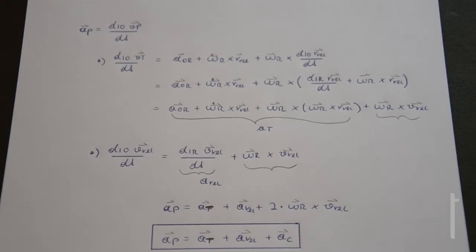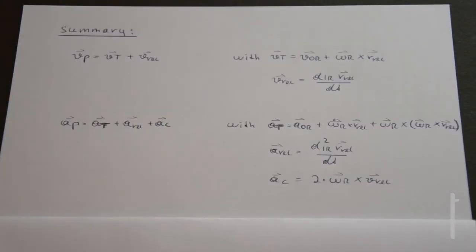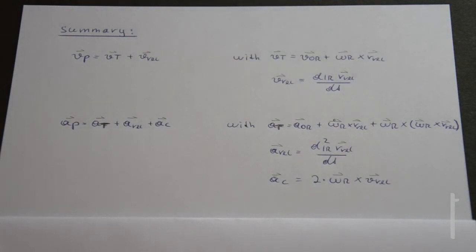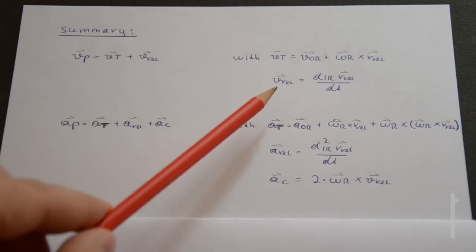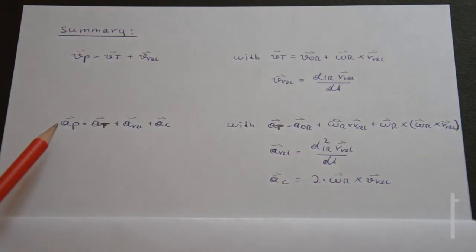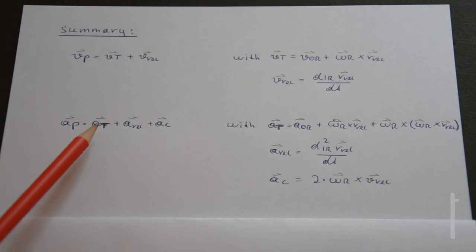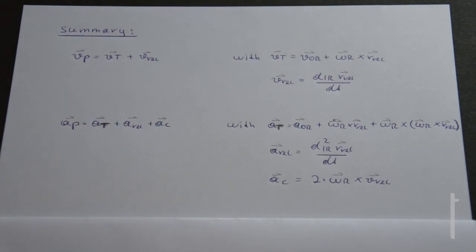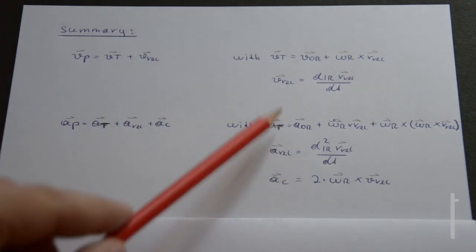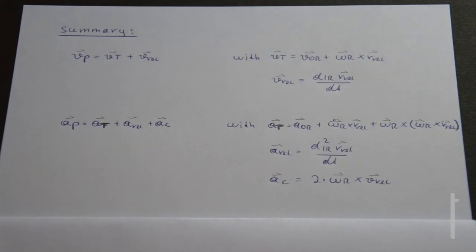At the end, I want to give you a summary of the formulas we have established — these are the formulas you should know. As I said, for calculations it is enough to just know the formulas and be able to apply them correctly. The absolute velocity of P equals the velocity of transportation motion plus the relative velocity. The absolute acceleration equals the acceleration of transportation motion a_t, plus the relative acceleration, plus the Coriolis acceleration — with these three quantities. That's it for this time, see you in the next clip.